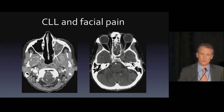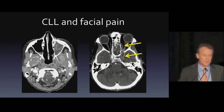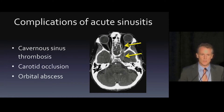This patient also got a CTA because we were worried about vascular problems. You'll see there's non-enhancement in the cavernous sinus and in the internal carotid artery, and also a subperiosteal collection. So these are additional complications of acute sinusitis to think about: cavernous sinus thrombosis, carotid occlusion — which is rare but can be devastating — and then also, more commonly, orbital abscess.